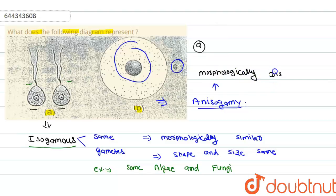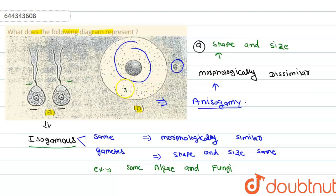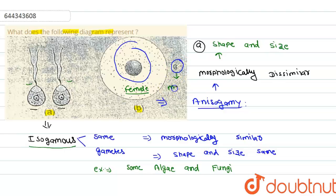They are morphologically dissimilar, and the shape and size are also different. In diagram B, the female gamete is large in size and longer in shape. The male gamete is shorter in size and shape, very small in comparison to the female gamete.